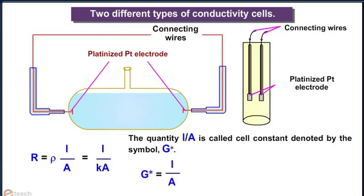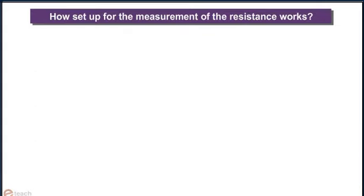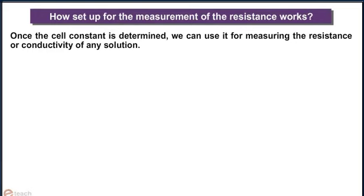Where G = L/A = R × κ. Now, we will learn how the setup for the measurement of resistance works. Once the cell constant is determined, we can use it for measuring the resistance or conductivity of any solution.